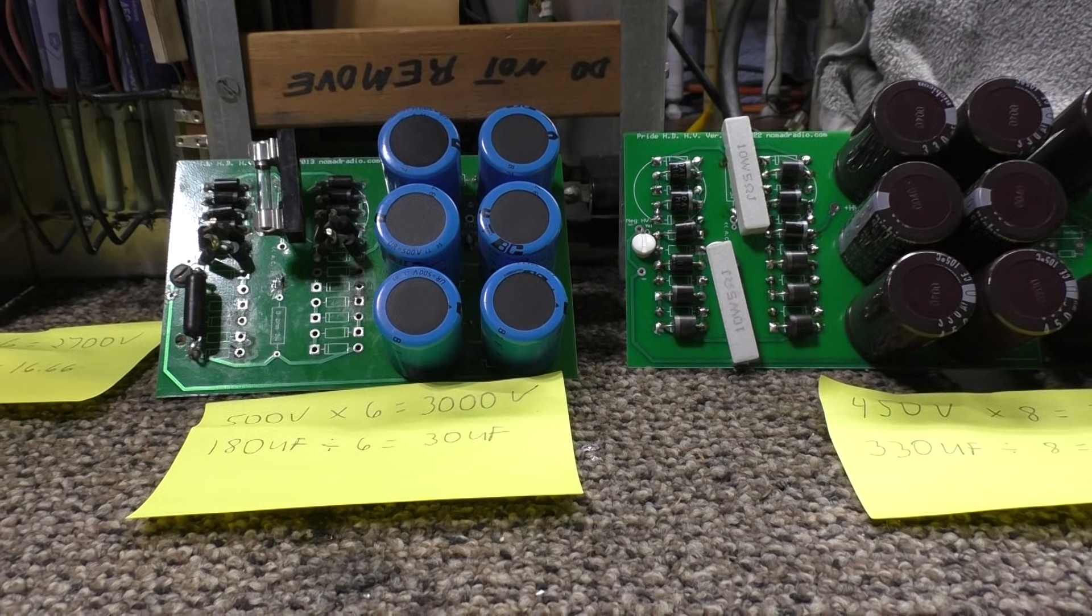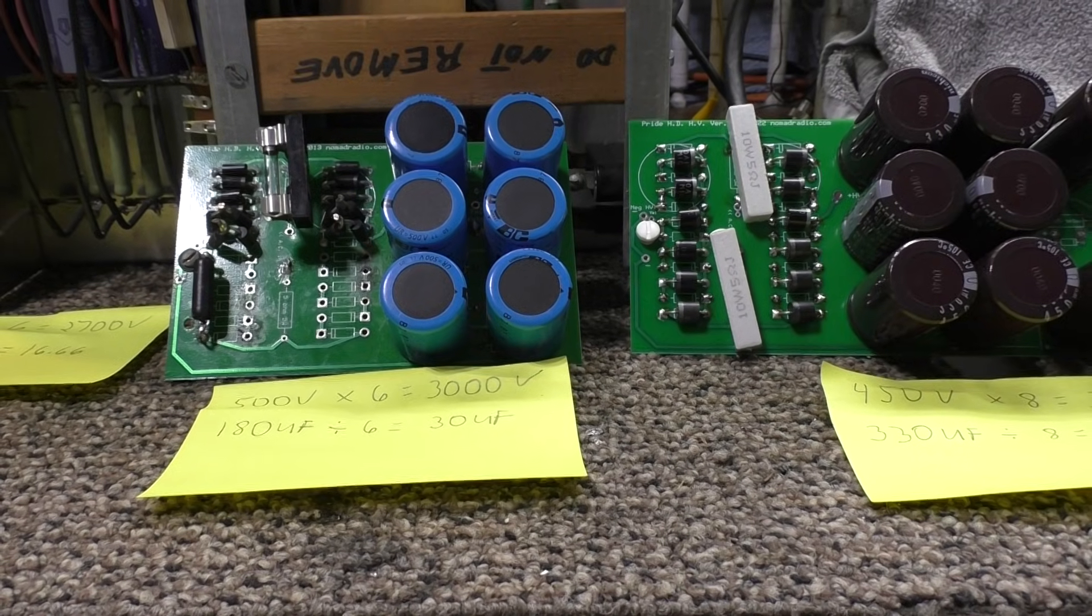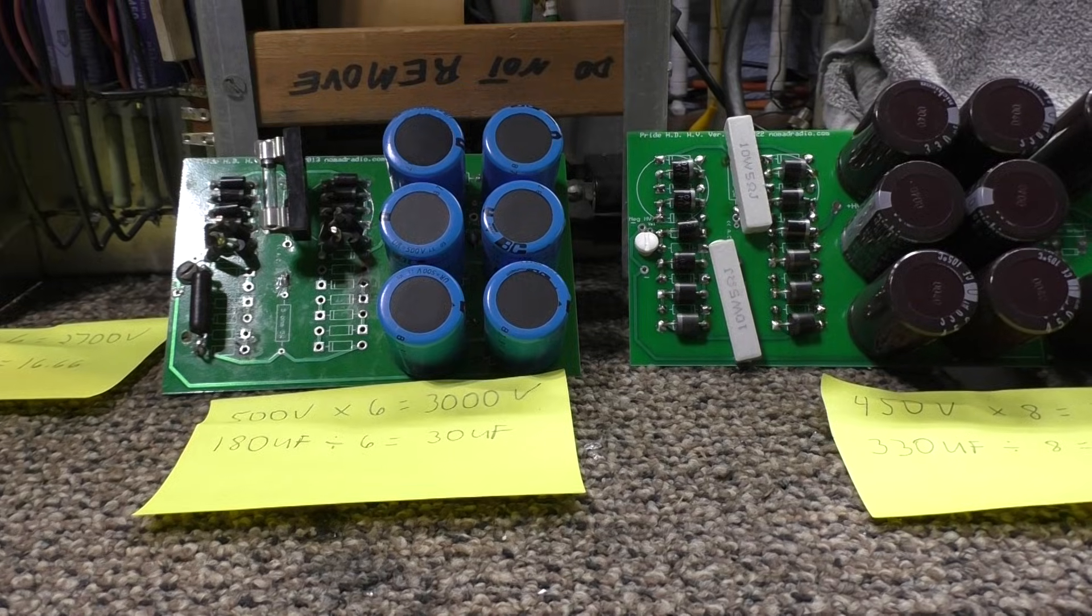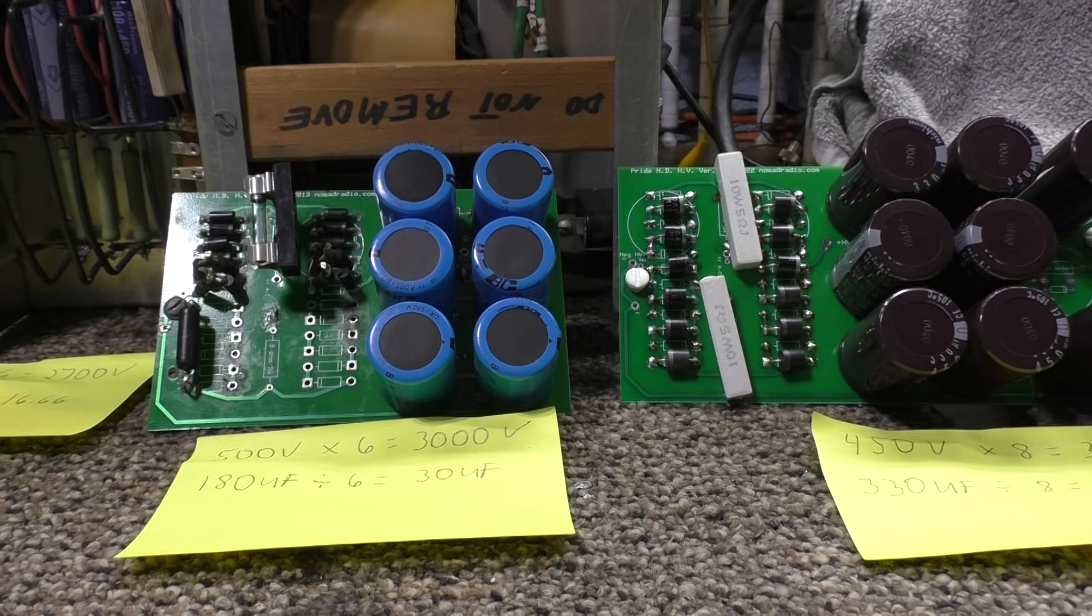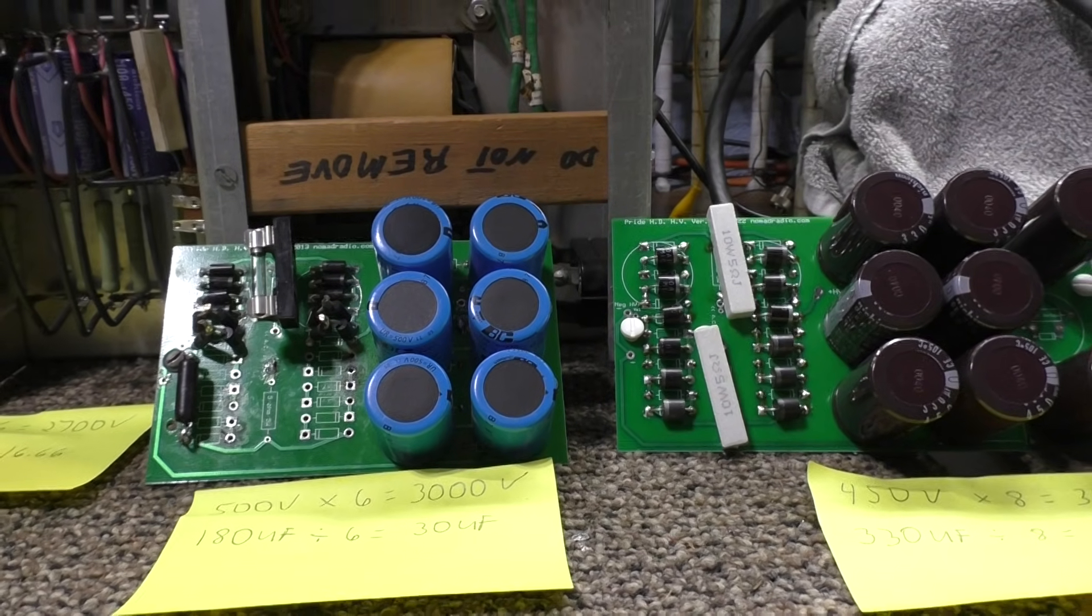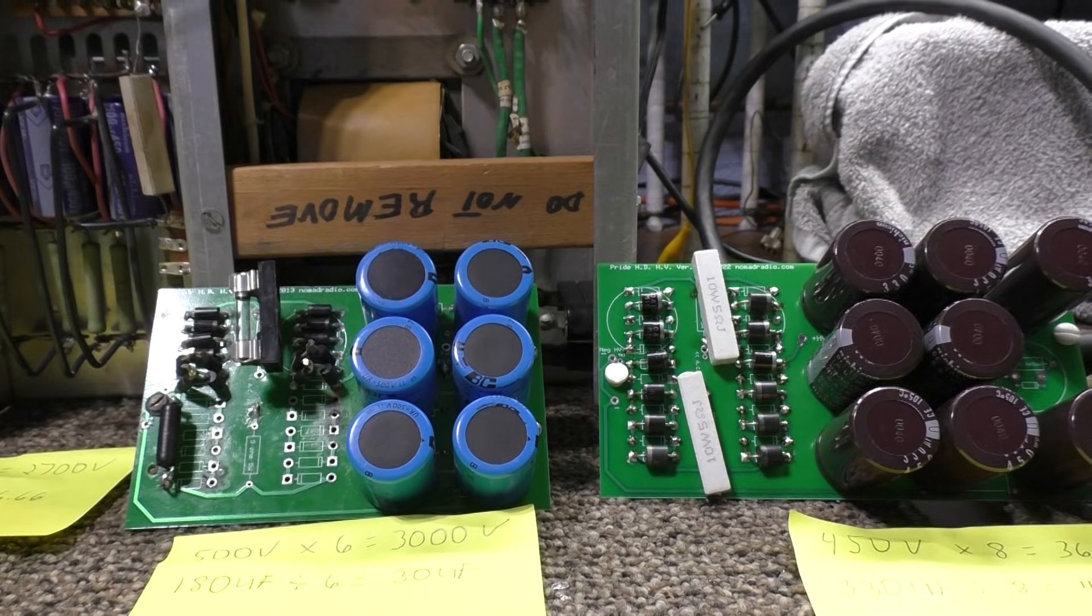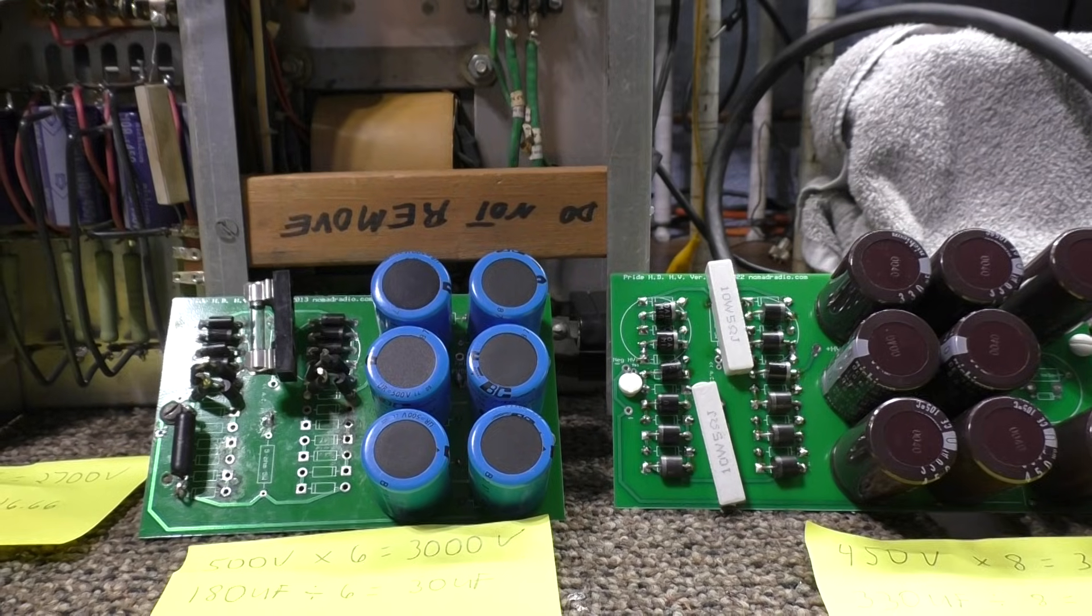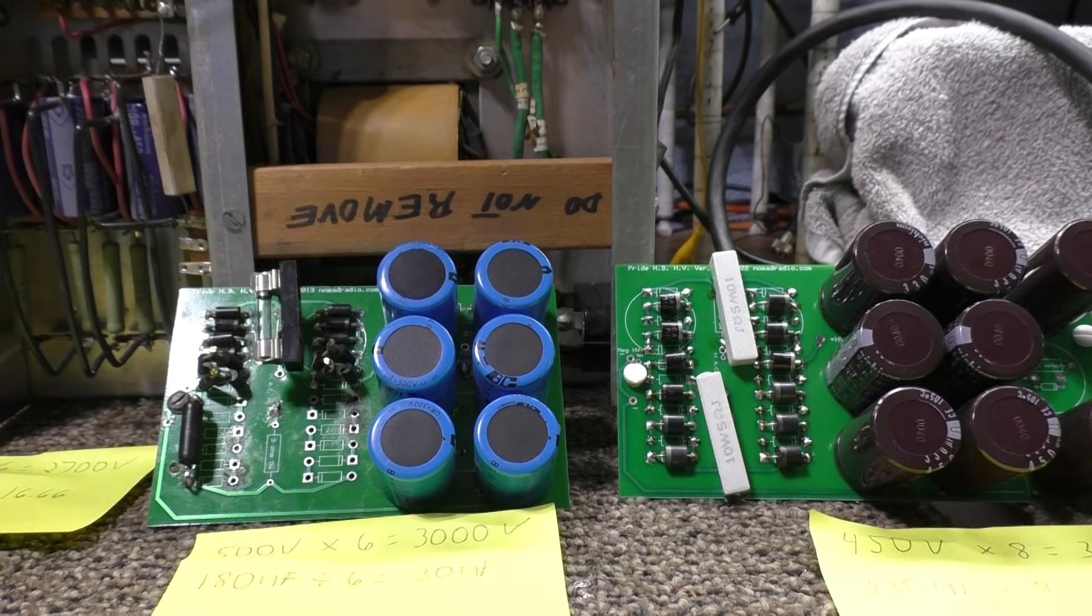So if you got an 800-volt amp, like a DNA Maverick 250 or a Palomar 300A, runs at 800 volts on the high voltage on the plate, you can get away with putting two 450 volts in series, because in series, you add or multiply the voltage.